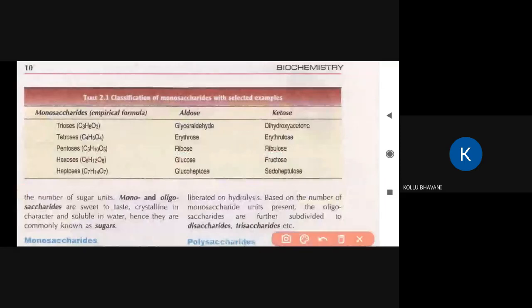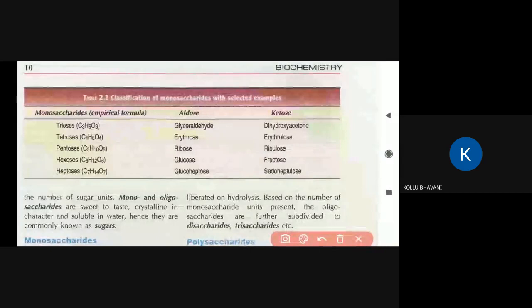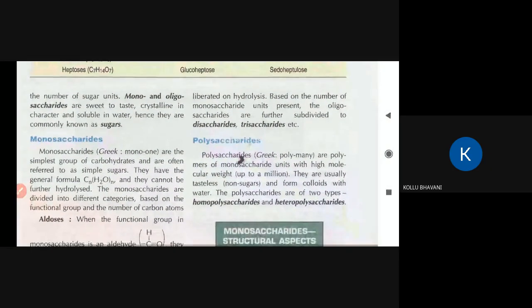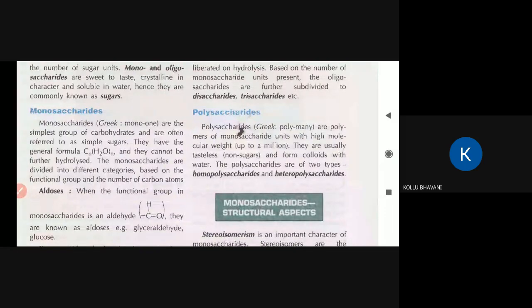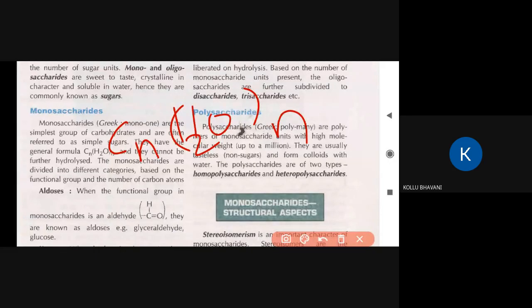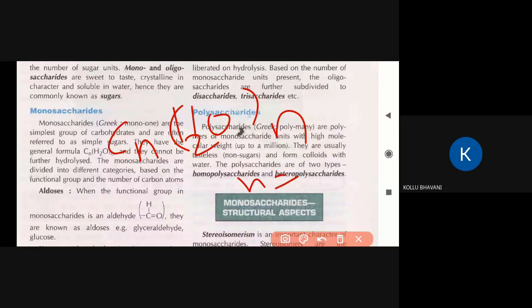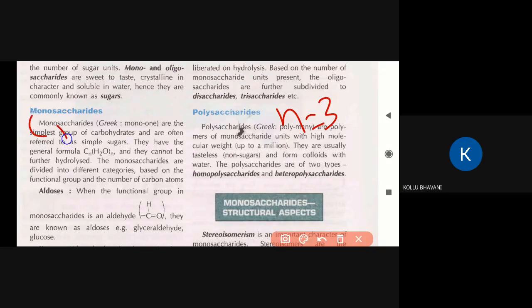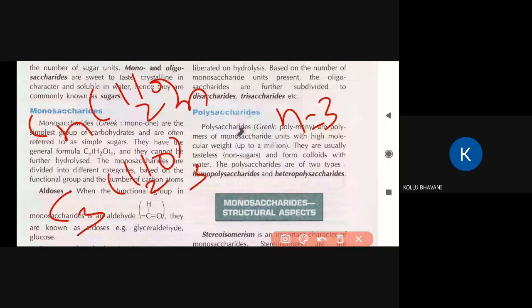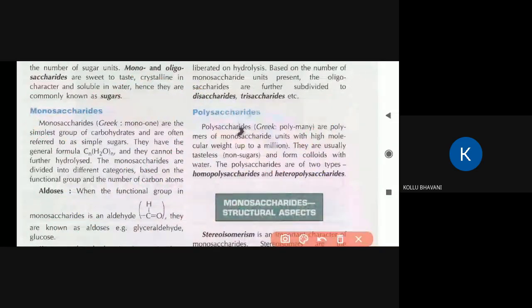Depending upon the carbon number, we look at monosaccharides. Monosaccharides are single units. The general formula for monosaccharides is CnH2nOn. Here, n is equal to the carbon number. For example, if n equals 3, then we have C3H6O3. This is the monosaccharide formula.